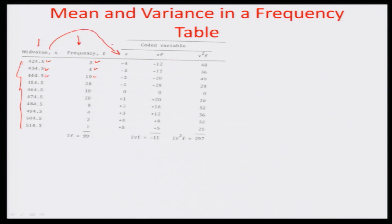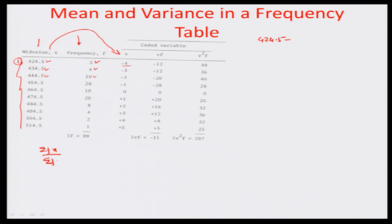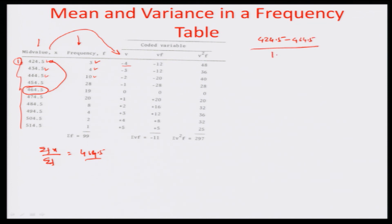We want to code this variable and make it into a coded variable v. The coded variable v is basically the mid-value minus the mean. In this distribution, sigma f x by sigma f gives a mean of 464.5. So for observation 1, the coded variable is 424.5 minus 464.5 divided by 10.